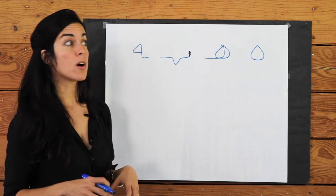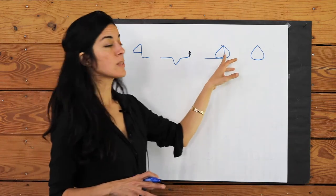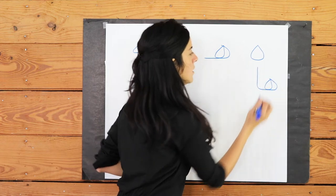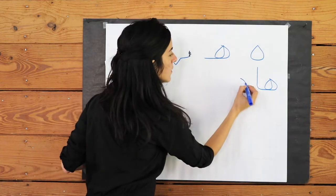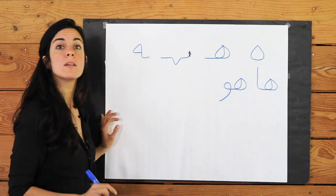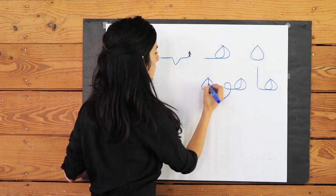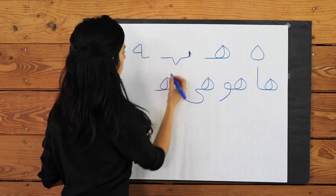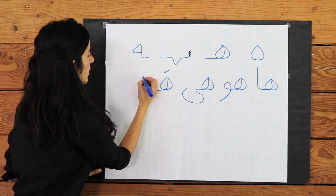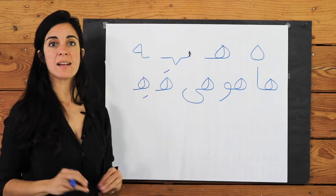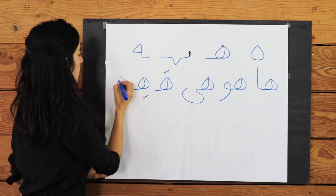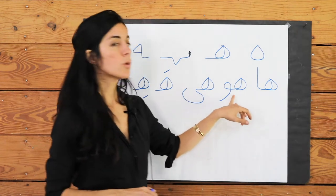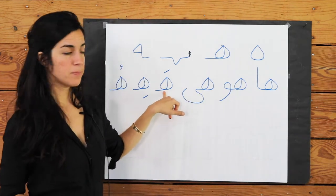Now let's combine H with our vowels, using the beginning-of-word shape since it has a letter coming after it. H with an A: ha. H with a U: hoo. H with an E: he. H with an A: ha. H with an A accent: he. H with an O accent: ho. So: ha, hoo, he, ha, he, ho.